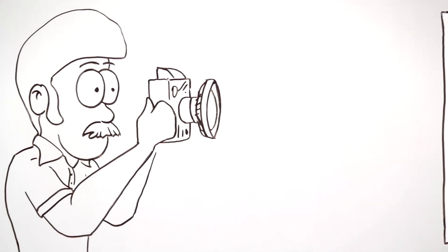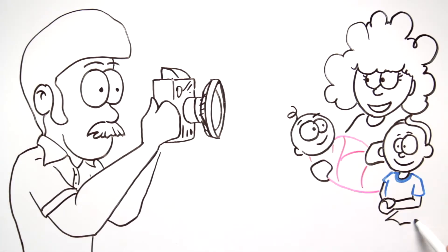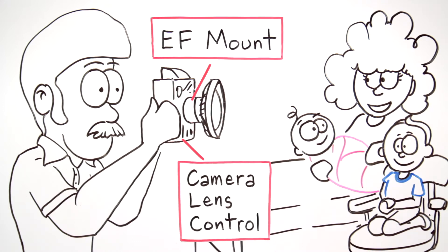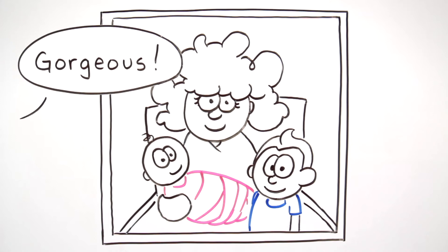In 1987, Canon revolutionized autofocus by allowing cameras to communicate with tiny lens motors. Focus became simple and automatic.